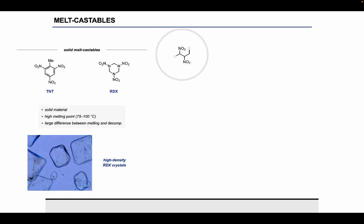There are two main areas of energetic materials that were of interest to our collaborators at the U.S. Army Research Lab. The first was solid melt-castable materials. Probably the most well-known melt-castable is TNT. These are solid materials that have a high melting point, and importantly, they need to have a large difference between the melting and decomposition temperatures so they can be melted safely without any premature decomposition occurring.